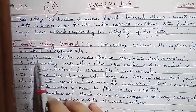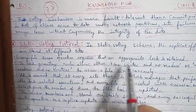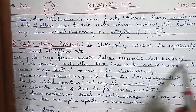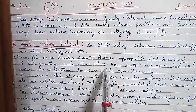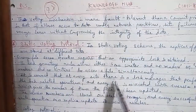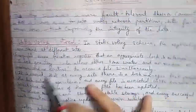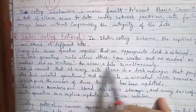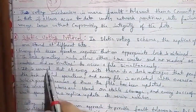Every file access operation requires that an appropriate lock is obtained. The lock granting rules are: either one writer and no readers, or multiple readers but no writer. No writer can access a file simultaneously — if simultaneous file access occurs, it is assumed to be a conflict.